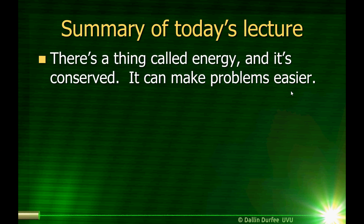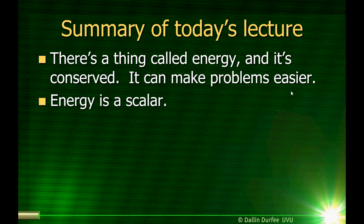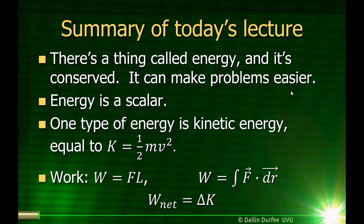A quick summary of today's lecture. There is a thing called energy, and it is conserved — knowing that can make problems easier. Energy is a scalar, has units of joules, which equals newton meters, or kilograms meters squared per second squared. One type of energy is kinetic energy, equal to one-half mv squared. Work is equal to the change in kinetic energy — the net work on an object is equal to the change in kinetic energy. The work done by any particular force on an object is just the integral of F dot dr. If the force is in the same direction that the object moves and the force is constant, we can simplify that to work equals F times L.